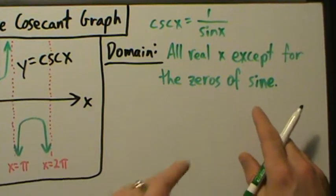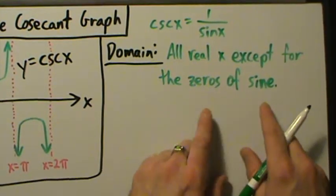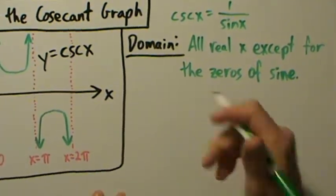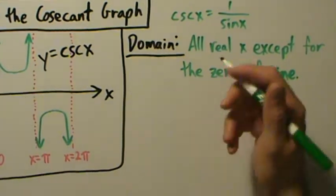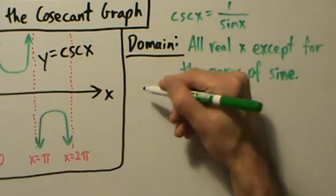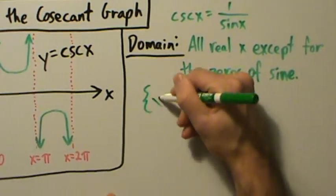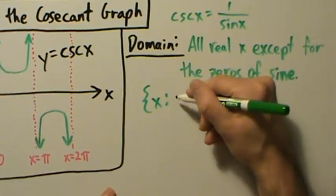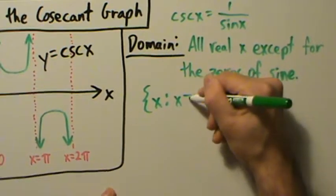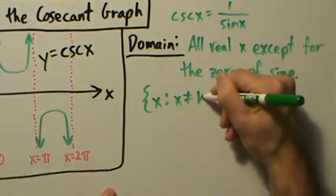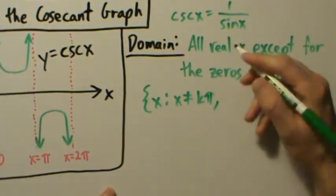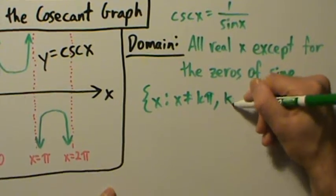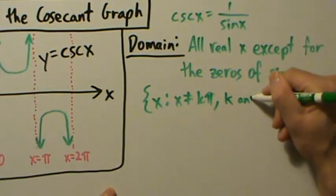This is how we say it in words. Mathematically, just like we've done a few times before, it's the set of all x such that x does not equal kπ, where k is any integer.